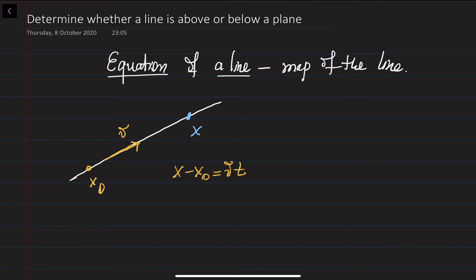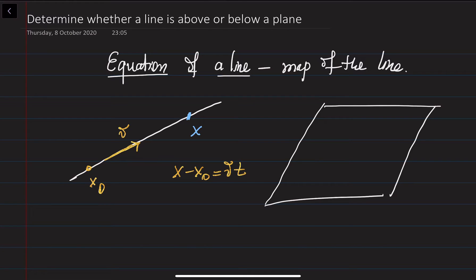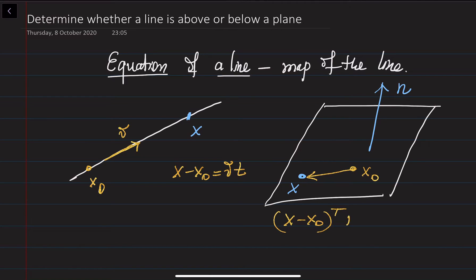We can construct the equation of a plane in the same manner. Our motivation is to know how to reach any point on the plane. The idea is: given a normal vector n orthogonal to the plane and a point x0 on the plane, the vector from x0 to any point x is orthogonal to n. So (x minus x0) dotted with n equals zero — this is the equation of a plane.